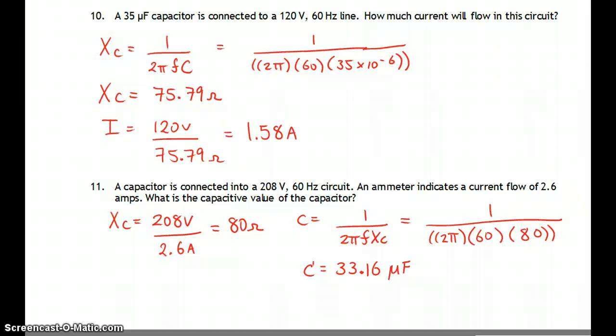Okay, number 11. A capacitor is connected into a 28V 60 hertz circuit. Ammeter shows us 2.6 amps. So we're looking for the capacitance value. Well, we'll take the 28 divided by the current of 2.6 gives us a reactance of 80 ohms. And when we pump that into the equation for capacitance, that gives us 33.16 microfarads.